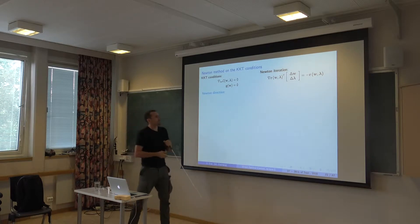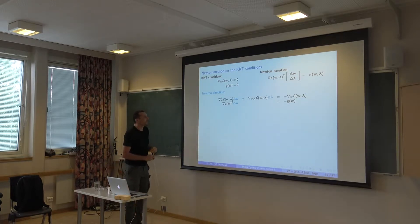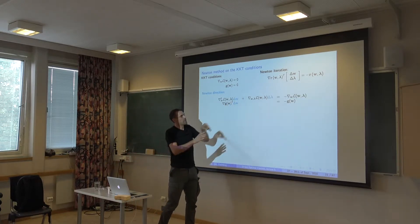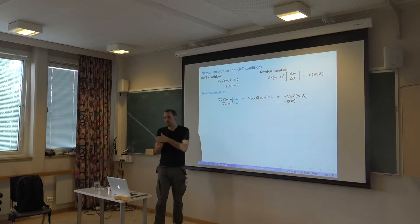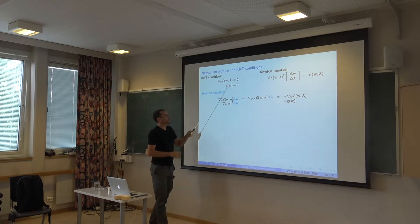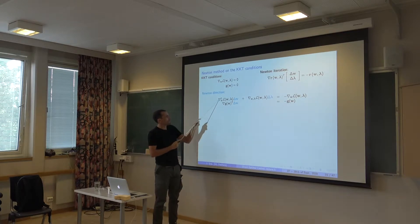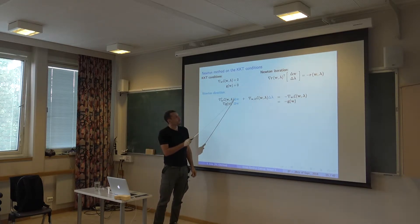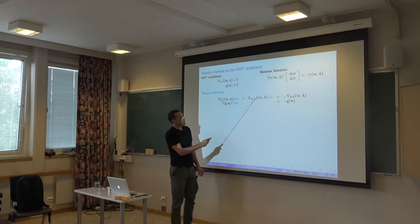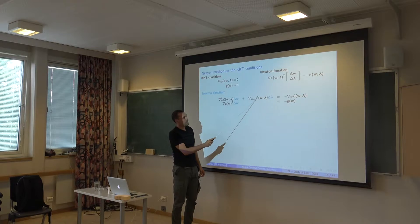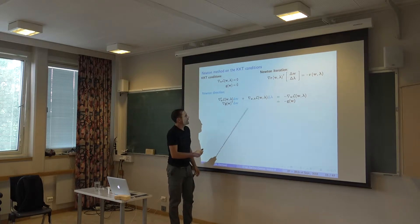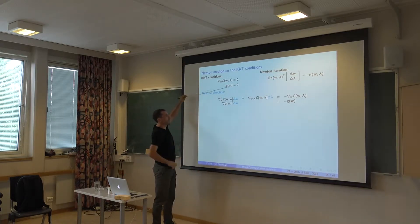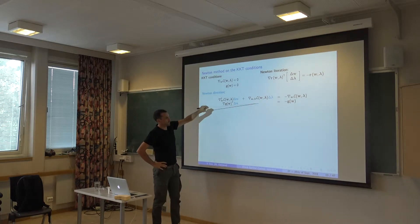We can unpack what it would mean to do that. What would the Newton direction look like? If I write this equation in more detail, when I form this matrix it will have components in W and lambda related to the first and second equation. We'll have the Hessian of the Lagrange function multiplying delta W, then cross derivatives between the primal and dual variables multiplying the dual variables — that's the residual of the first equation. The second line is the linearization of just the constraints; they don't contain lambda, so there's no term there.